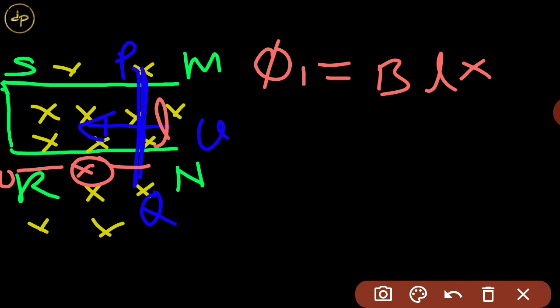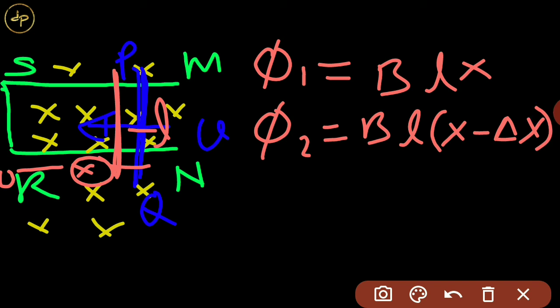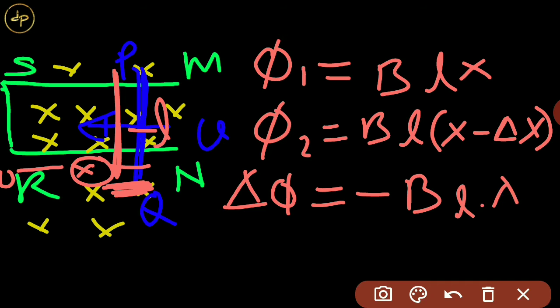And after some time delta T, the PQ rod moves to here. Then the closed loop PSRQ will have a smaller area, and so the new flux through the closed loop will be BL times X minus delta X, where delta X is this shift.